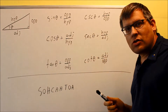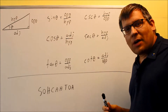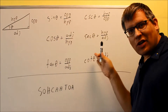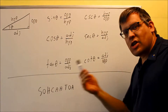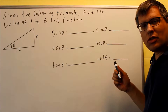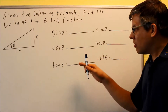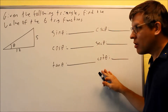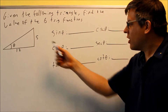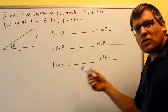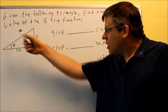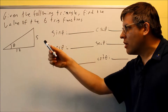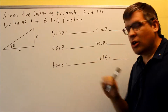Now that we've looked at all these definitions, we're going to move on and look at examples working with them. These questions ask us to find all six trig functions based off of information provided with a triangle. Because some definitions involve the hypotenuse, we need to know the third side of the triangle. So the first thing we do is use the Pythagorean theorem to find the missing side.